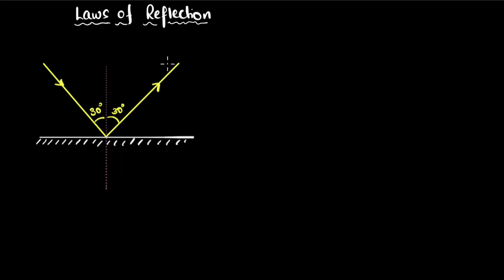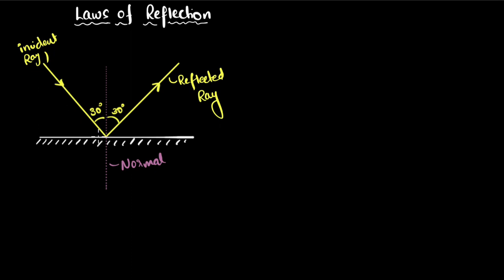Let's explore the laws of reflection. The first law says that the incident ray, which is the ray that strikes the mirror, the normal, which is an imaginary perpendicular that you draw at that point, and the reflected ray — all three rays lie in the same plane. In this example, the plane is that of the blackboard. This rule is only useful if you're dealing in three dimensions, but we're not, so it's not useful for us.